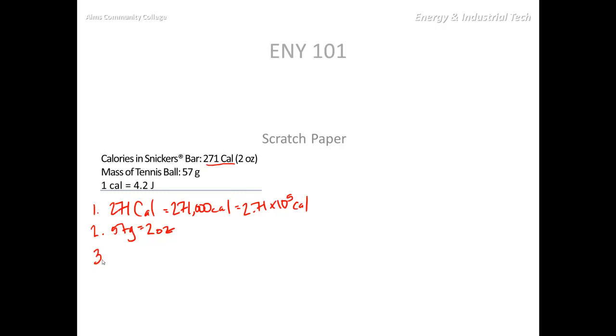I want to find out now how much energy in joules are in this number of calories in the Snickers bar. So I'm going to start with 2.71 times 10 to the 5 calories, and then I'm going to multiply by this conversion ratio that says 4.2 joules is equal to 1 calorie, 1 energy calorie. If you're unclear on how I set that up, make sure you read the learning moment on unit conversions. What we find then is that we end up with 1.14 times 10 to the 6, or just over 1 million joules.